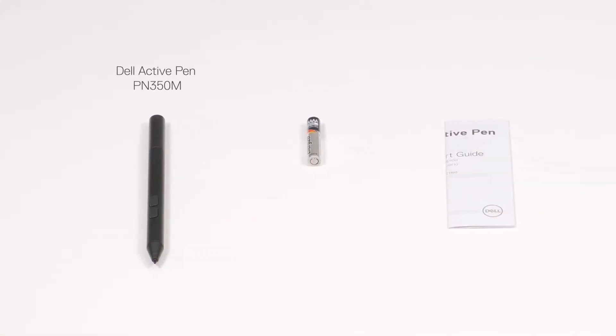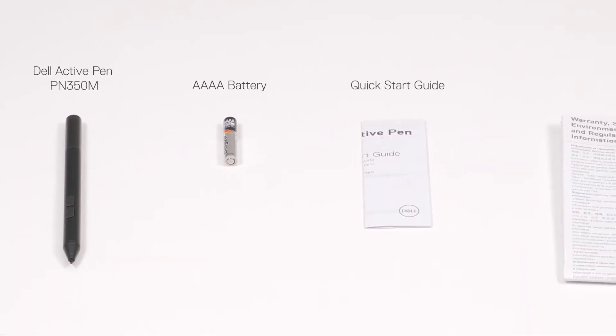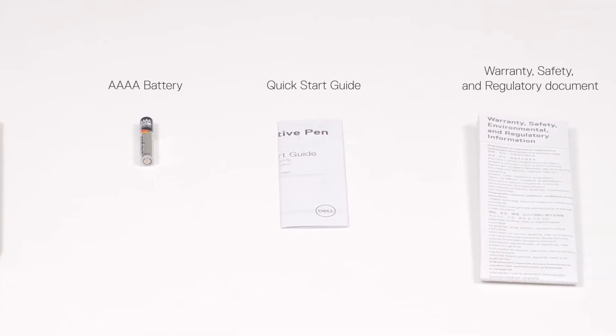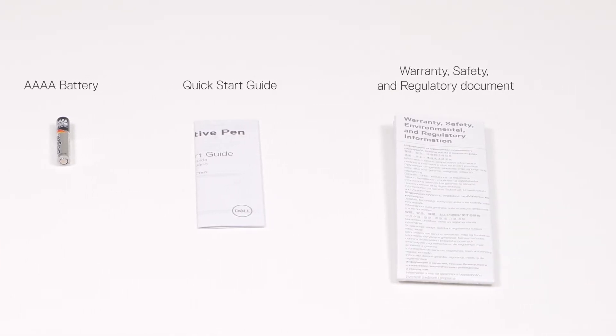Inside the box, you'll find the Dell Active Pen, a quadruple A battery, the Quick Start Guide, and a warranty, safety, and regulatory document.